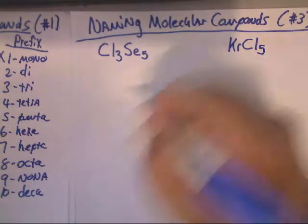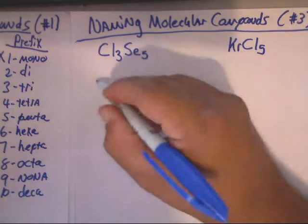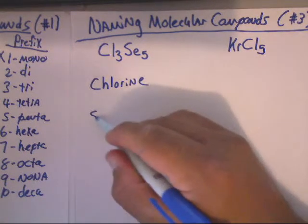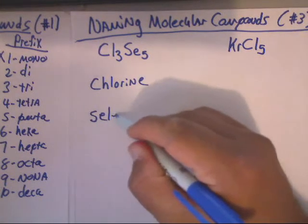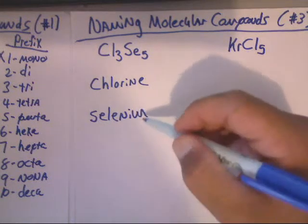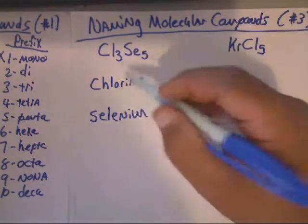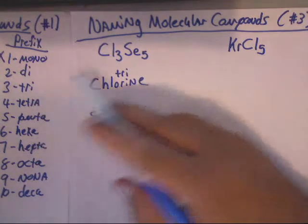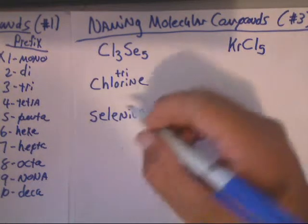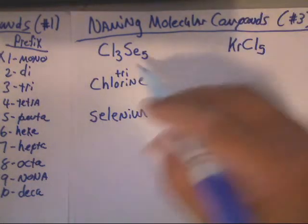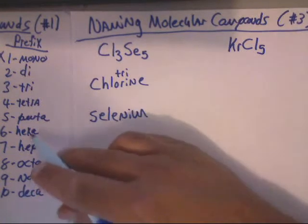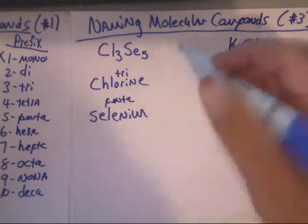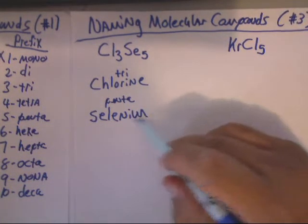We need to make a list again of the elements involved. We've got chlorine, C-H-L-O-R-I-N-E, and we've got selenium, S-E-L-E-N-I-U-M. Let's pick up the prefixes — we've got three, so that's tri. We have five selenium atoms, so that's going to be penta, P-E-N-T-A.